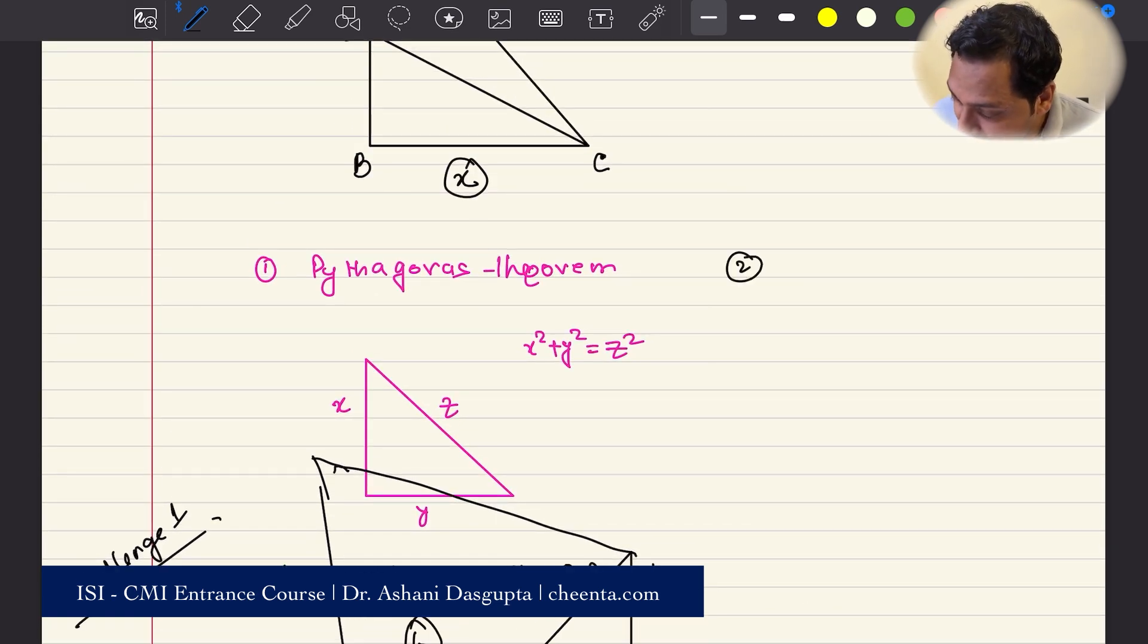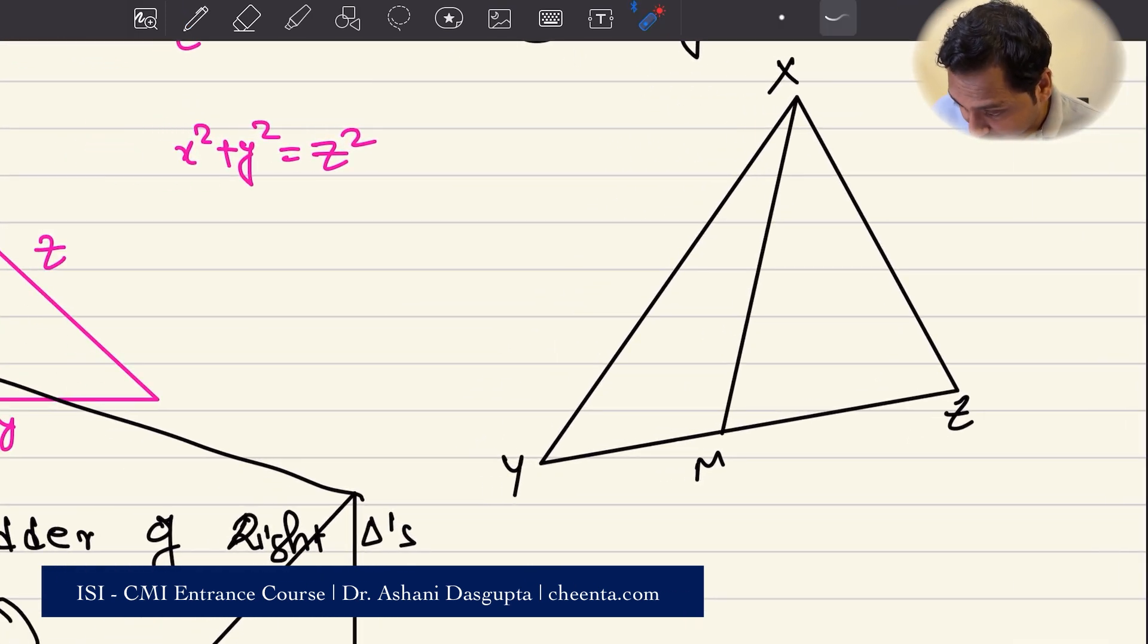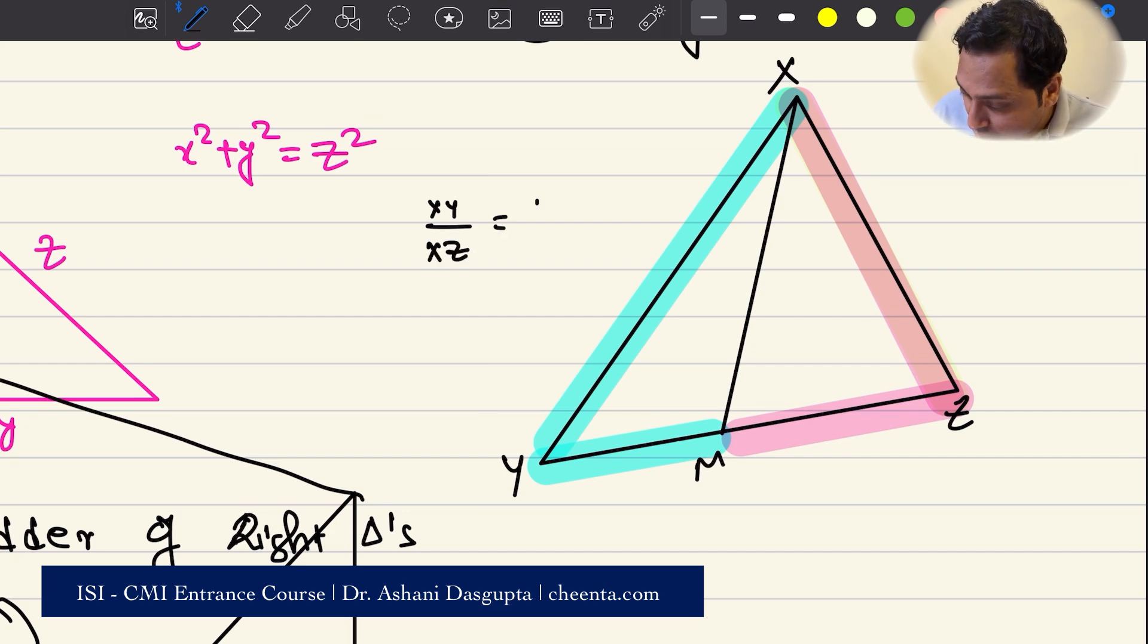Now let's come back to this. The second thing that we need is the angle bisector theorem. This is also a very nice tool in elementary geometry. If you have a triangle X, Y, Z and if XM is the angle bisector of angle X, then the ratio of this side and this side, the ratio of the blue and the pink is same as the ratio of the blue and the pink. This ratio of these two sides is equal to the ratio of these two sides. So we can write it like this, that XY divided by XZ is equal to YM divided by MZ.